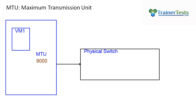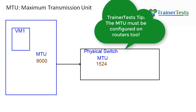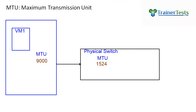However, it doesn't come without its drawbacks. One of the most important things is to make sure that we're properly configuring the MTU consistently across our network. In this case, let's assume that the physical switch has been configured with an MTU of 1524. That MTU is significantly lower than what we've configured on our ESXi host or our virtual switch.